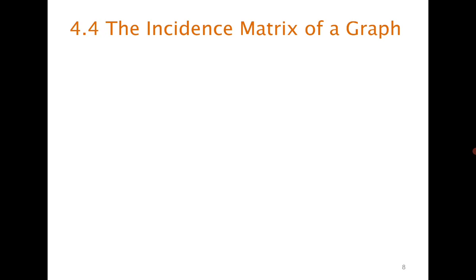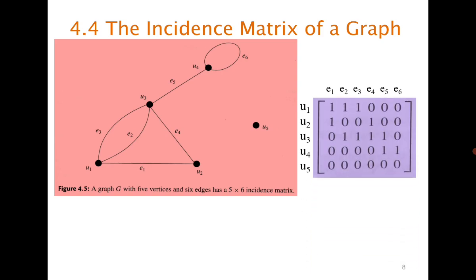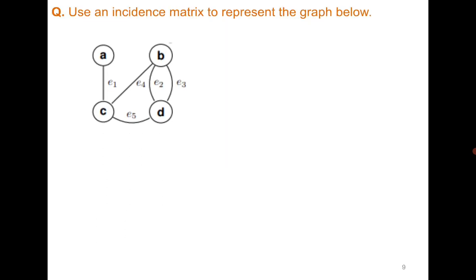One more concept is the incidence matrix. The adjacency matrix talks about the adjacency relation between vertices, whereas the incidence matrix talks about the relation between a vertex and an edge. For example, u1 is incident to e1, e2, and e3, so those entries are 1 and all other entries are 0. You write vertices as rows and edges as columns: if an edge is incident to a vertex, the entry is 1; otherwise it is 0. Try this as an exercise for the given graph.